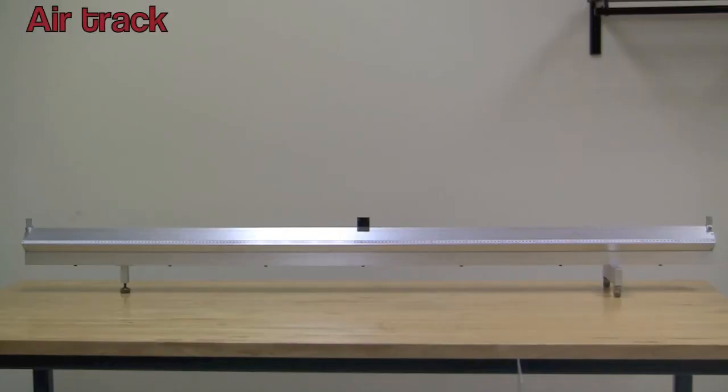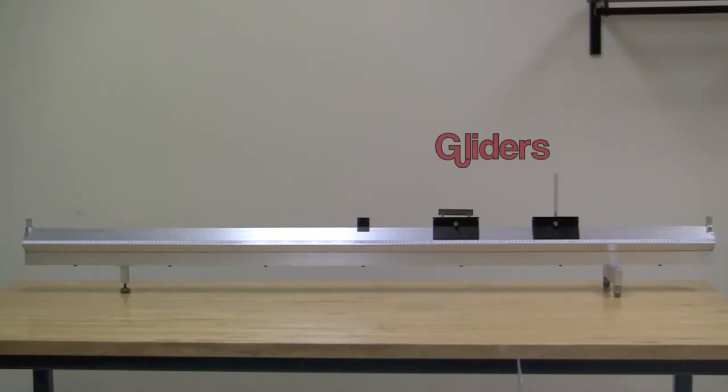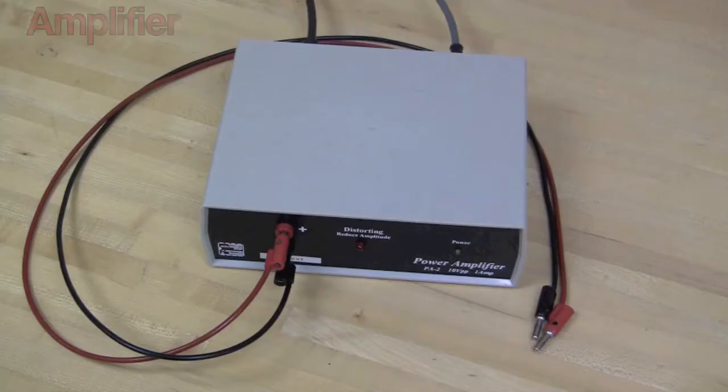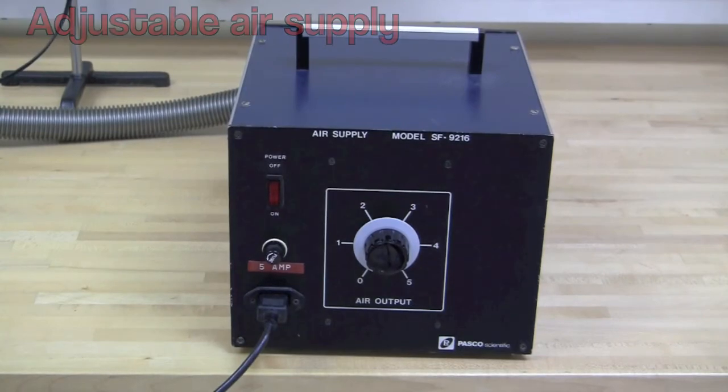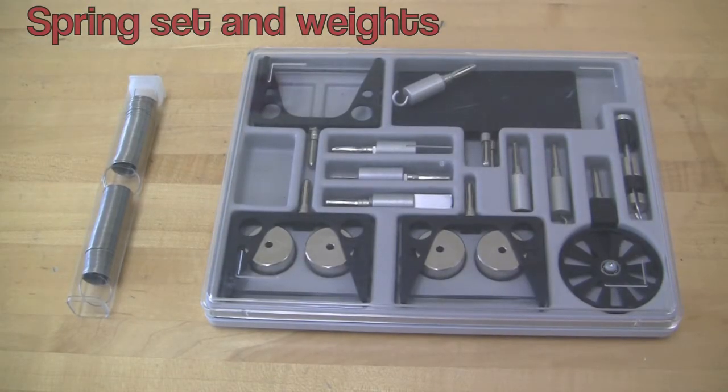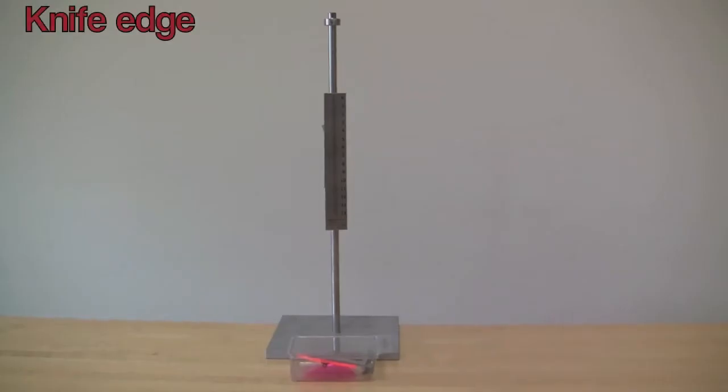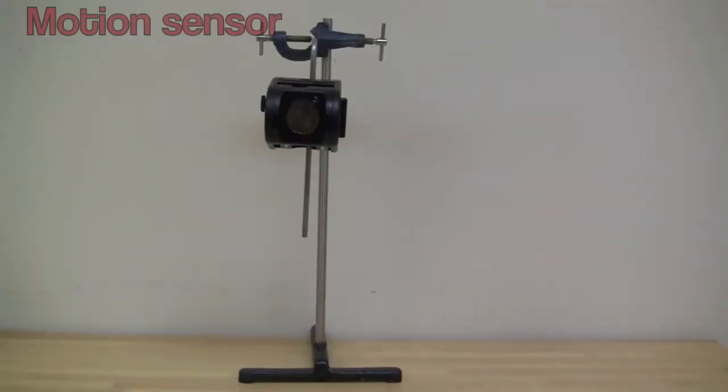You will be using a 2-meter long aluminum air track, gliders, a speaker, an amplifier, adjustable air supply, spring set and weights, knife edge to measure spring constant, a photo gate, and a motion sensor.